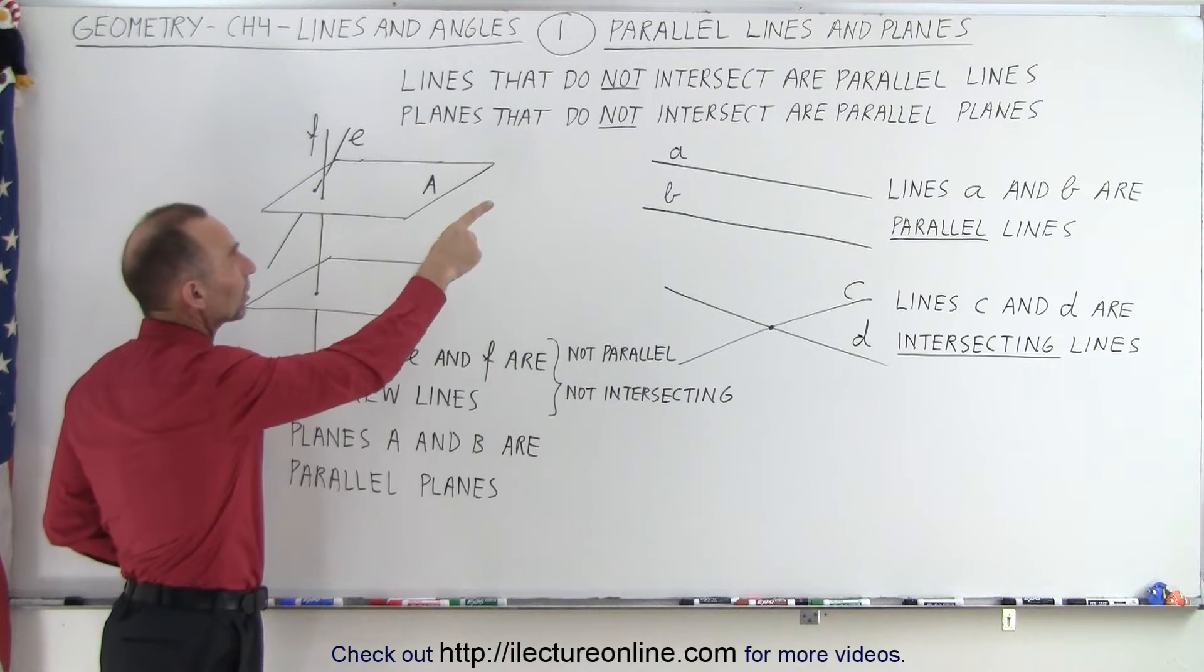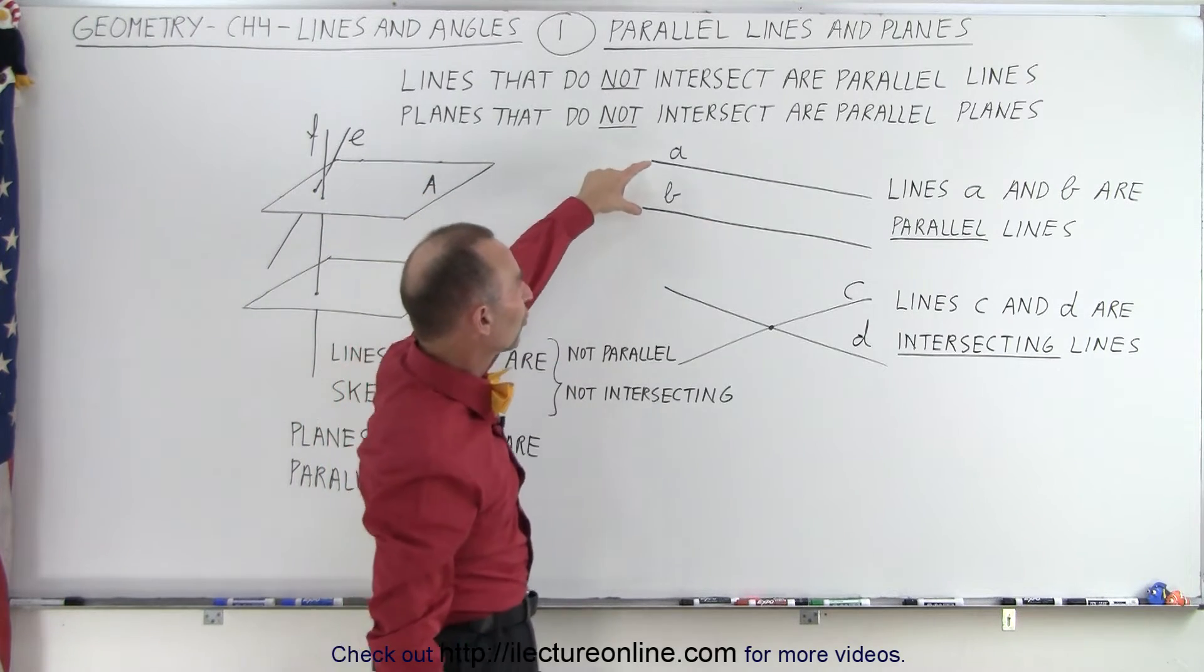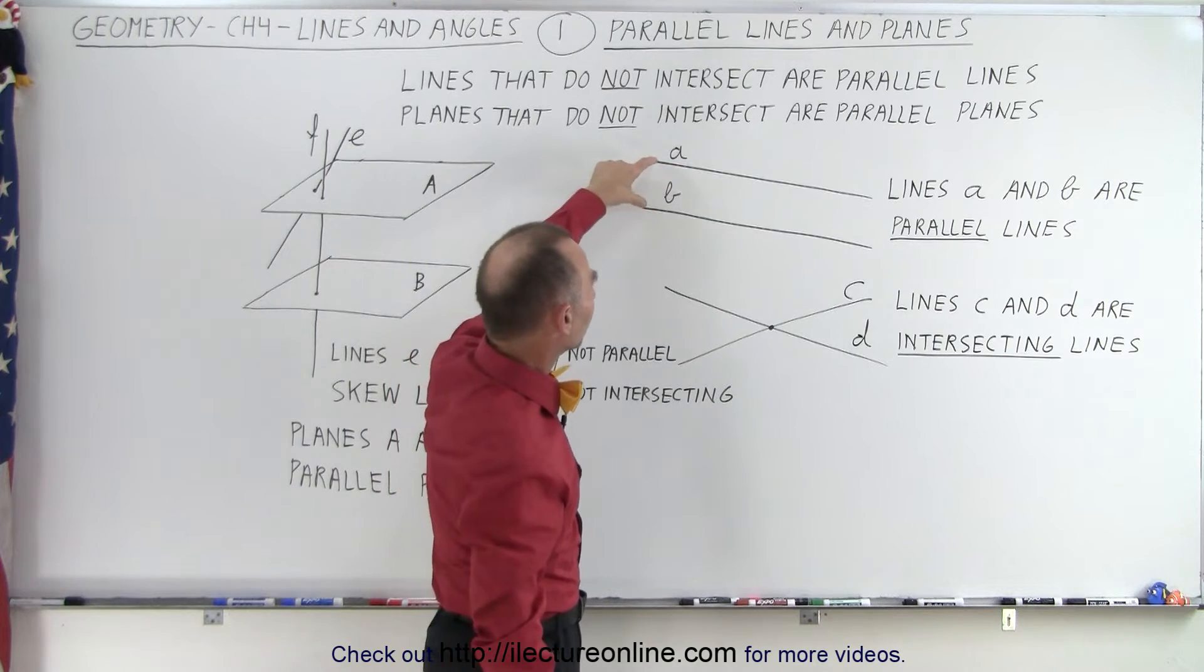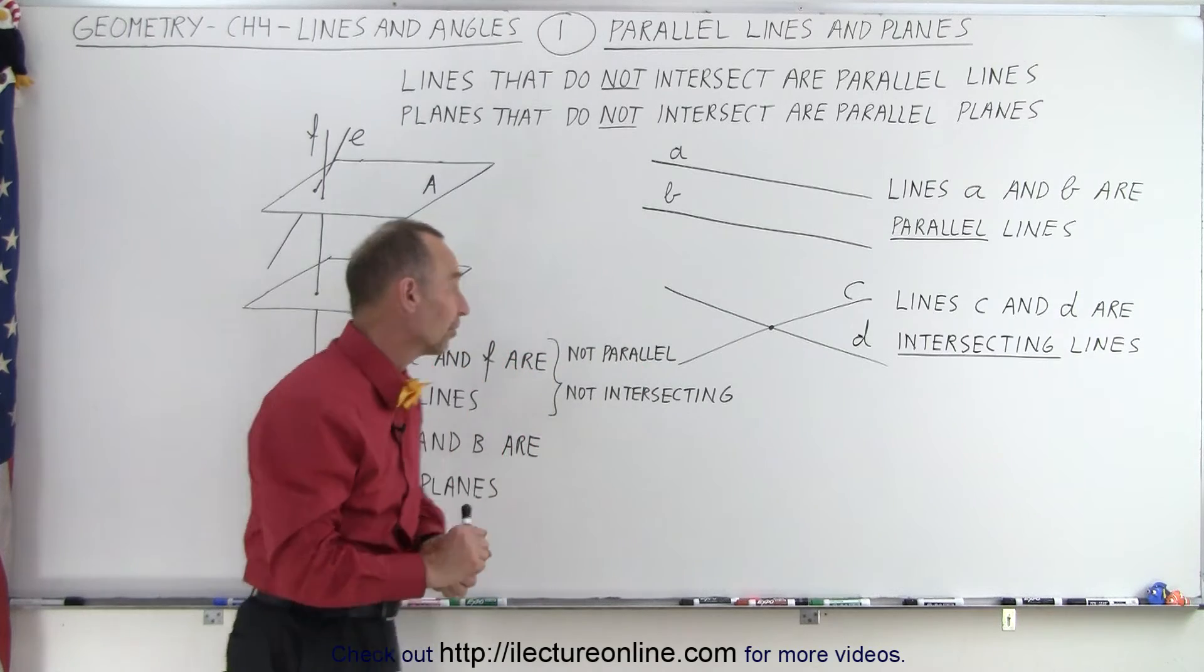Here's an example of parallel lines. Notice that A and B are parallel because the distance between them stays constant everywhere. That's another way of looking at parallel lines.